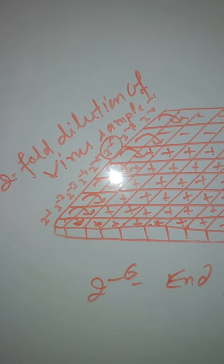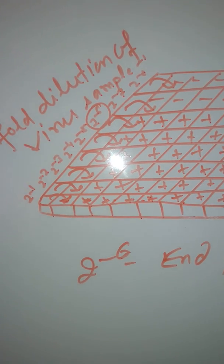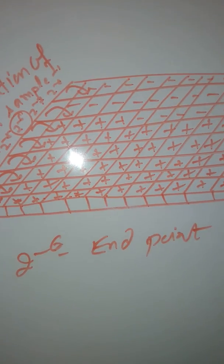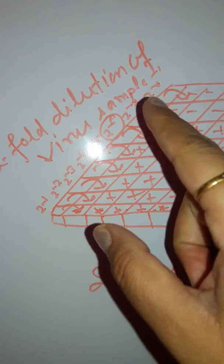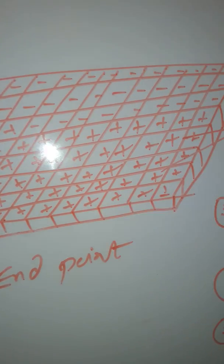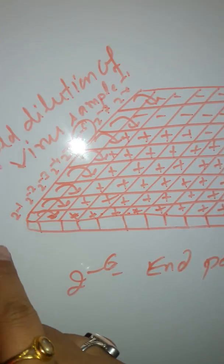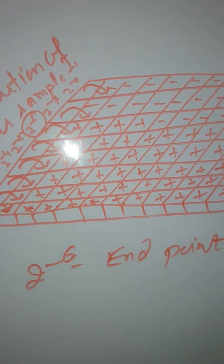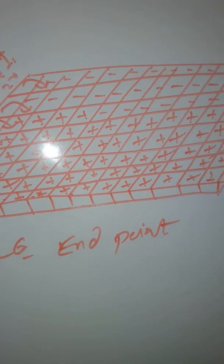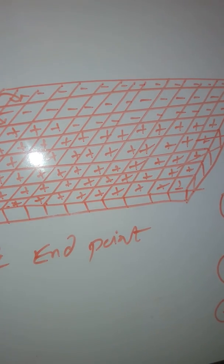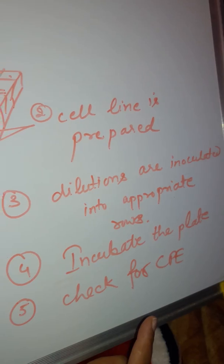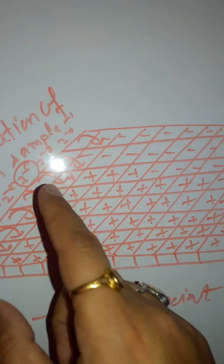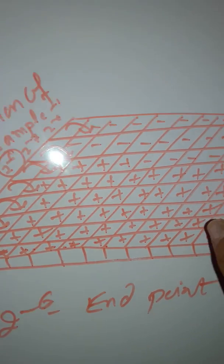The endpoint dilution assay with animals can also be done in a microtiter plate. In the microtiter plate, in the first row we prepare the twofold dilution of the virus sample, and in the rest of the wells we prepare the cell line. The appropriate dilution is injected into the appropriate row and incubated at 37°C for 24–48 hours. After that we check the cytopathic effects. After a particular dilution, there will be no cytopathic effects in the cell lines — this indicates the endpoint.